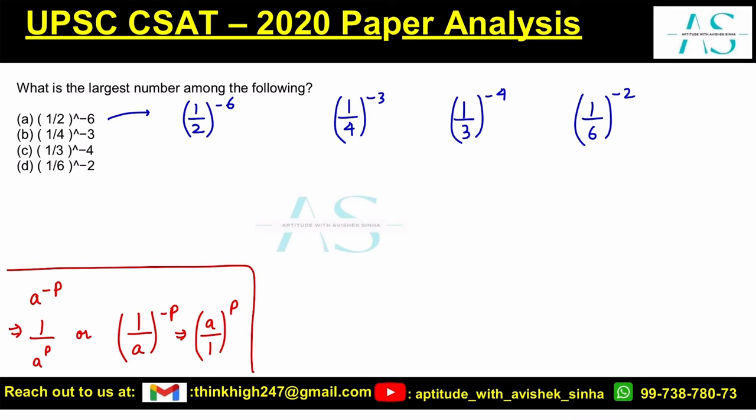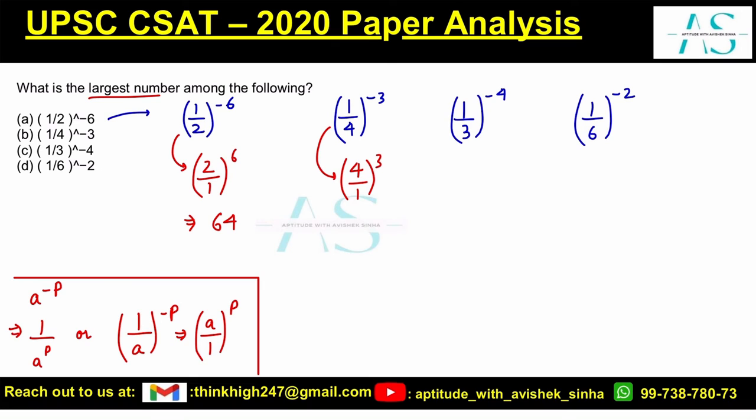This can be evaluated as two by one to the power six, which is two to the power six, which is actually two to the power five is thirty-two, two to the power six is sixty-four. Let's find out the others. This can be written as four by one to the power three, or four cube, which is sixty-four. So these two are same, obviously.